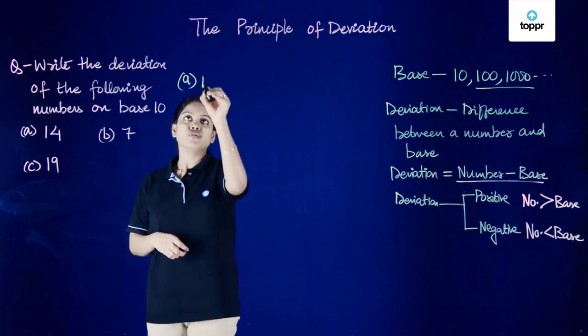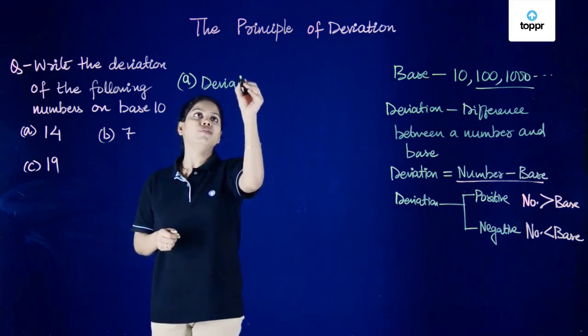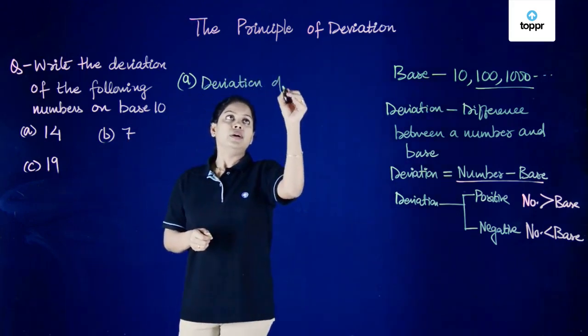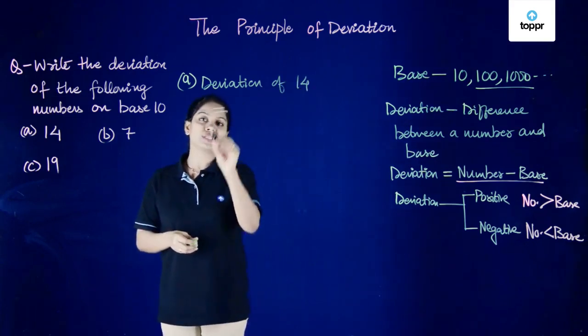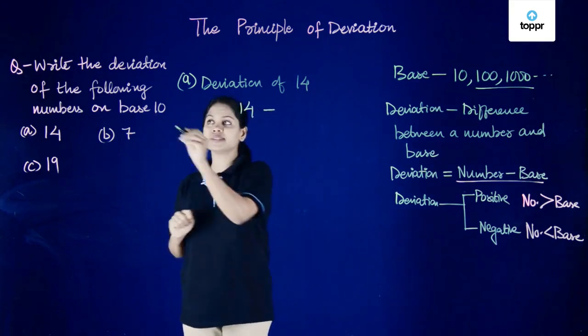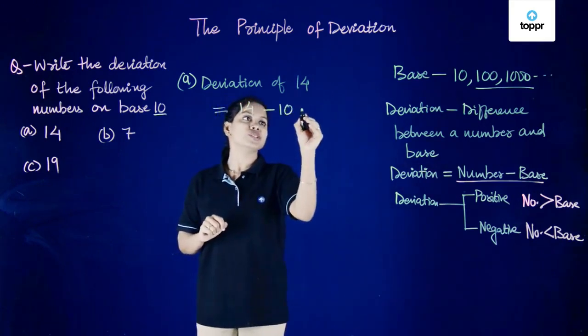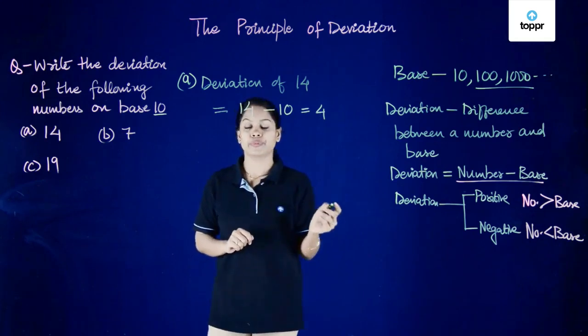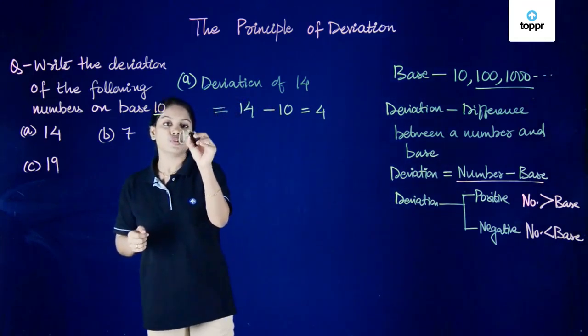Now for 14, we want the deviation of 14. Deviation of 14 is equal to number minus the base. So number is 14 and base has been given as 10. So 14 minus 10, that's equal to 4.